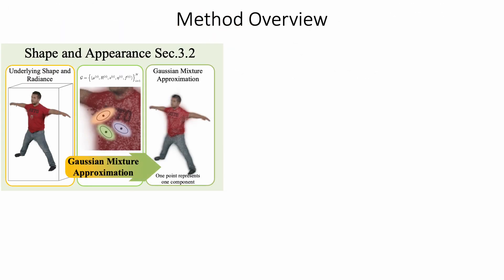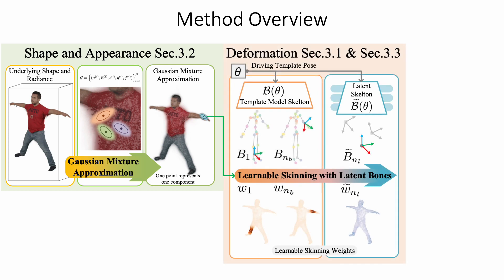GART explicitly approximates the underlying implicit radiance field with Gaussian mixtures. Each Gaussian component is parameterized by the center that corresponds to the mean, the rotation plus anisotropic scaling factors that construct the covariance, the opacity, and the color spherical harmonics, as presented in section 3.2. Such a GMM approximation enables efficient and simple deformation modeling via learnable linear blend skinning, exploiting the generic template model skeleton.